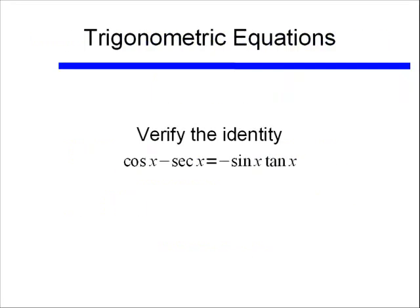In the previous video, we talked about how to verify identities. We gave this example, cosine x minus secant x is equal to negative sine x tangent x, and we proved that that was in fact an identity.